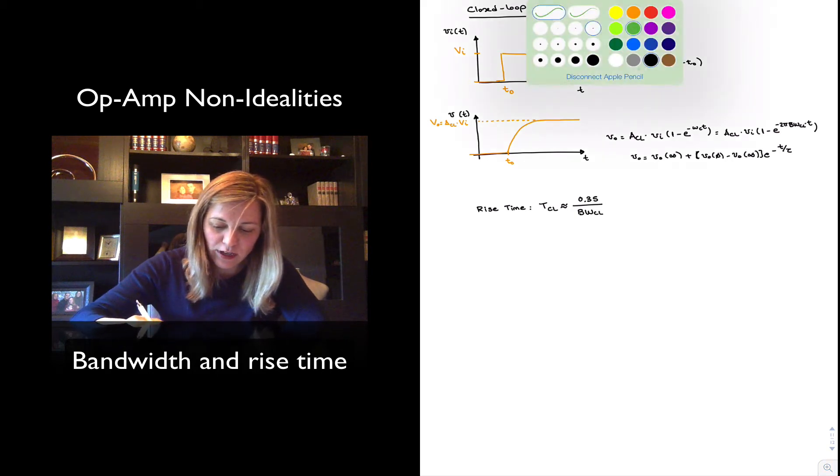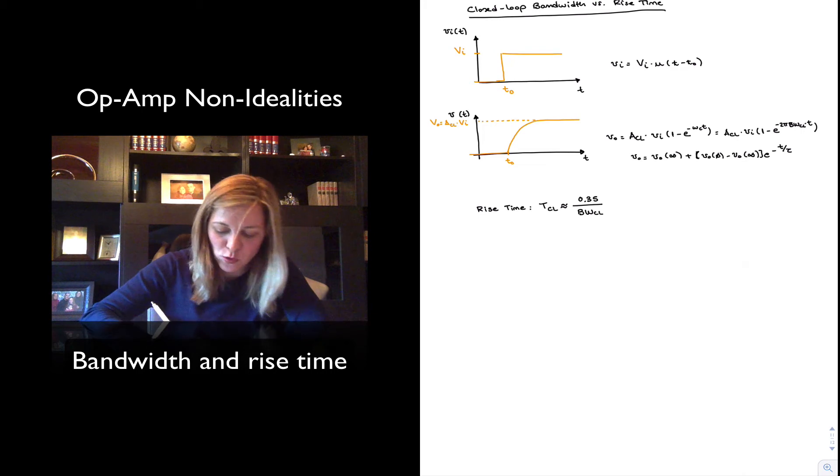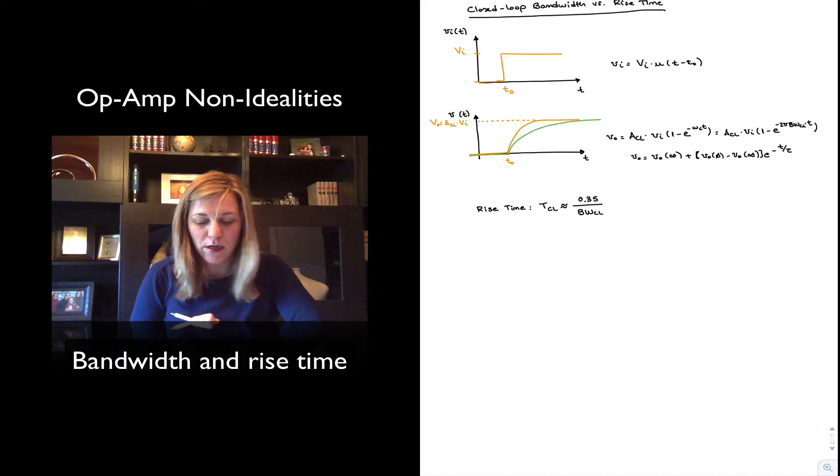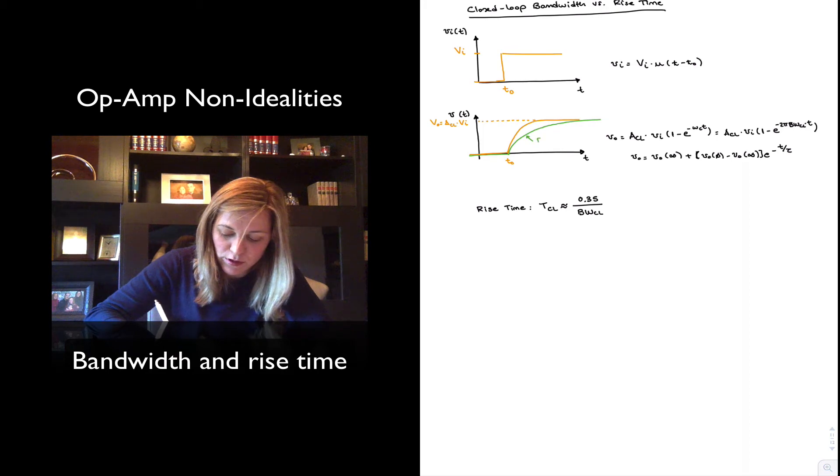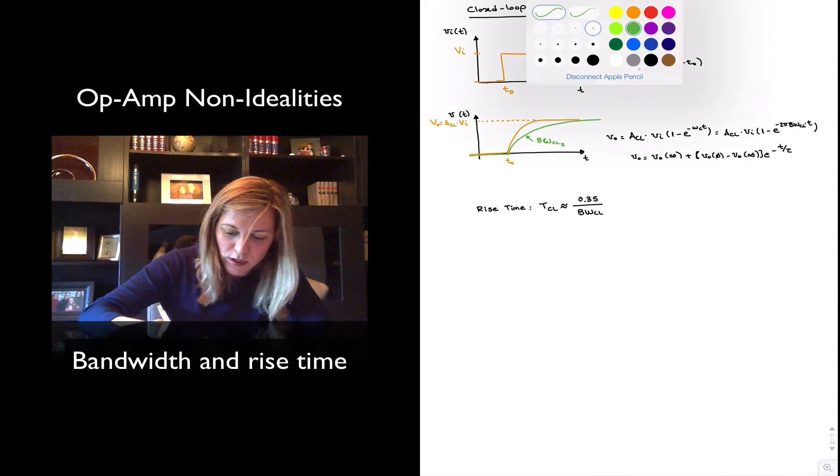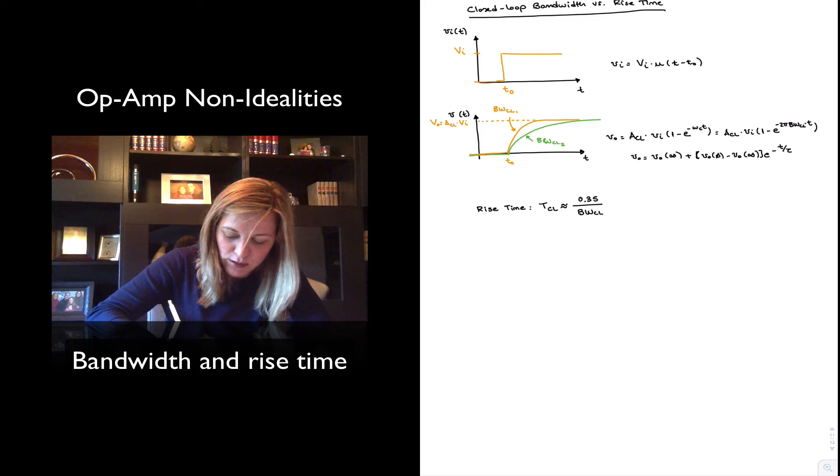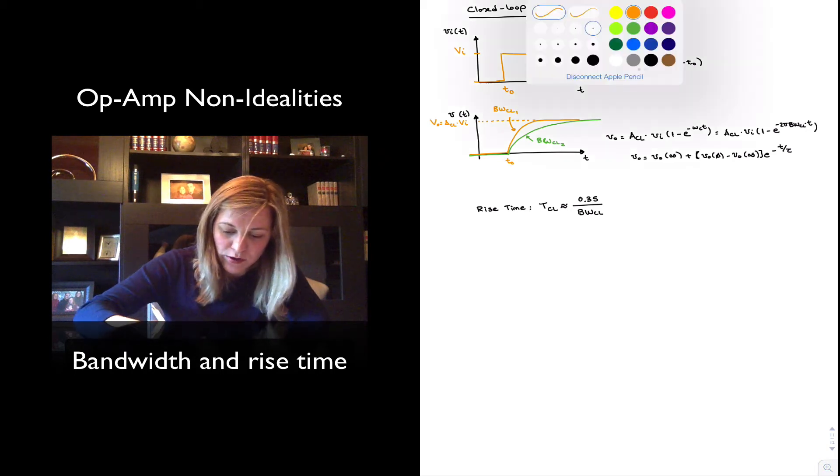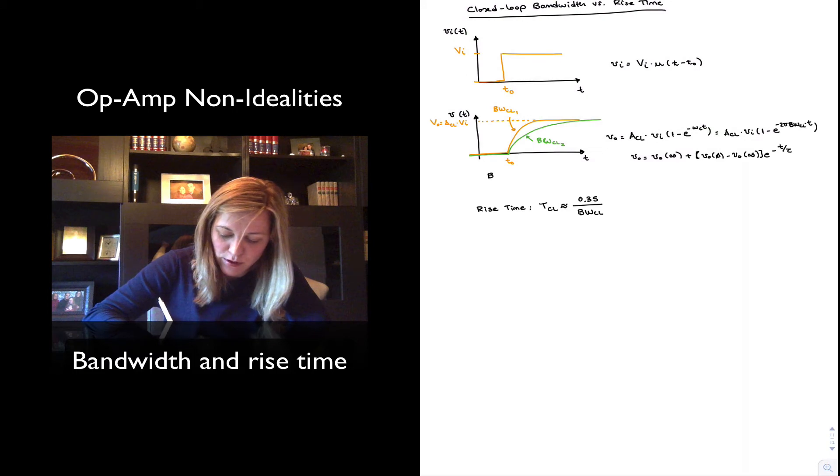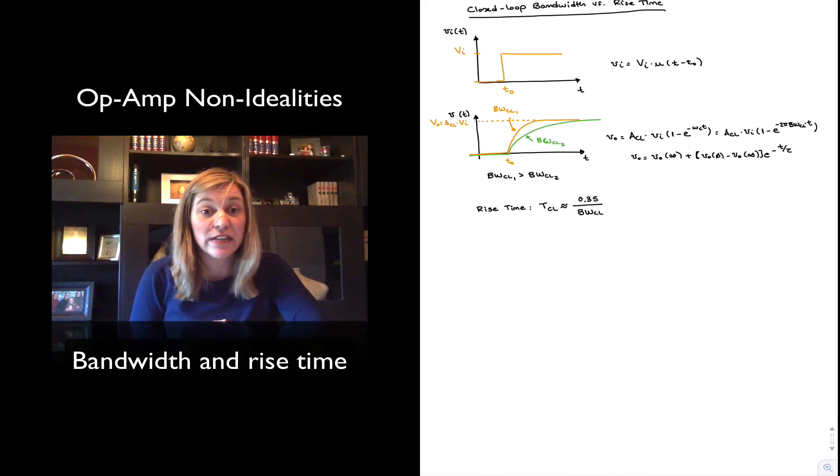And so, for example, if I had two amplifiers, one with a particular closed loop bandwidth and another one with a different closed loop bandwidth, this is more or less the difference in responses. So this will be one with bandwidth closed loop number two, and the orange will be an amplifier with a closed loop bandwidth BWCL number one, where the closed loop bandwidth of the first amplifier is greater than the closed loop bandwidth of the second. And we can observe that also in the faster rise time.